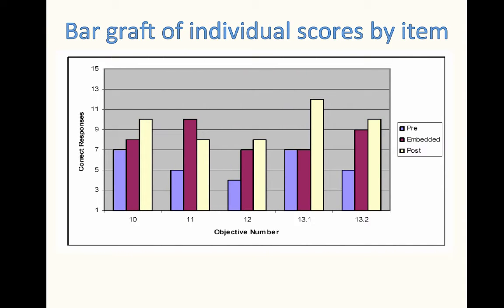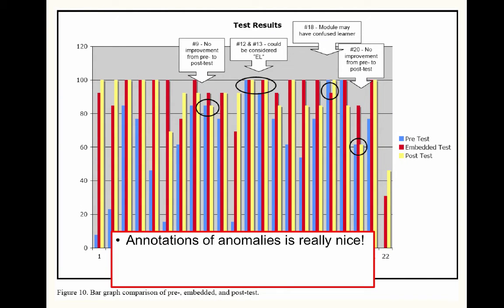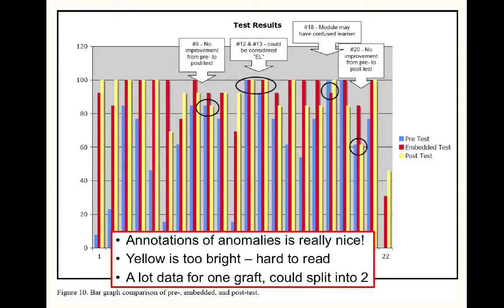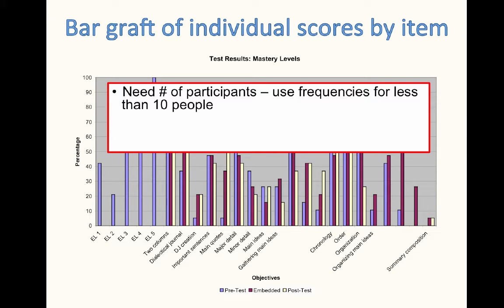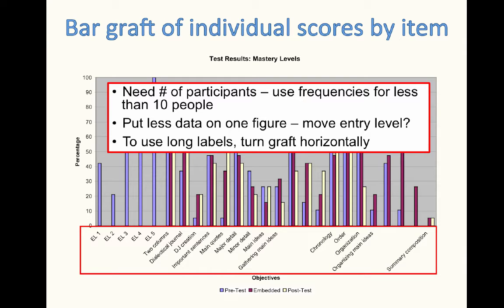Take a look at this bar graph of individual scores by item. It's clean, clear, and simple, although it's missing the number of participants — this should always be in every figure, graph, and table. Note that items 10 and 13.1 have very high pretest scores; you need to take a look at that. Another graph has nice annotations of anomalies, but the yellow is too bright and hard to look at. There is a lot of data for one graph — it would probably be better to split it into two so the bars are not so thin. It's also missing the number of participants and uses percentages, but remember you should use frequencies for less than 10 people. You should put less data on one figure so the bars are not too small. One thing you could do is move the entry behaviors to a separate table. If you have long labels, you can turn your graph horizontally.